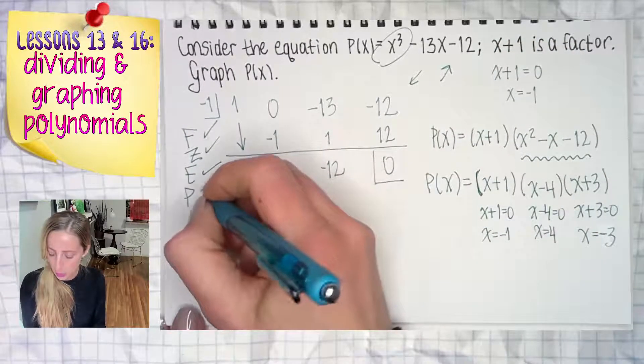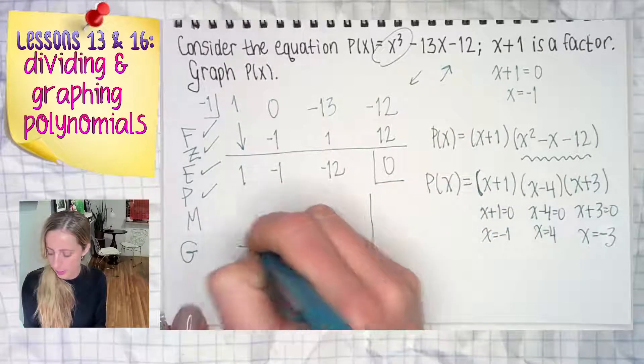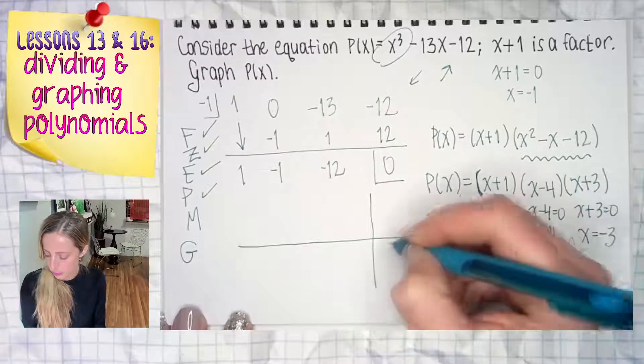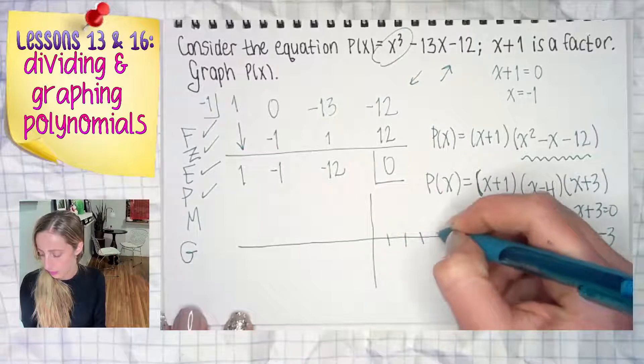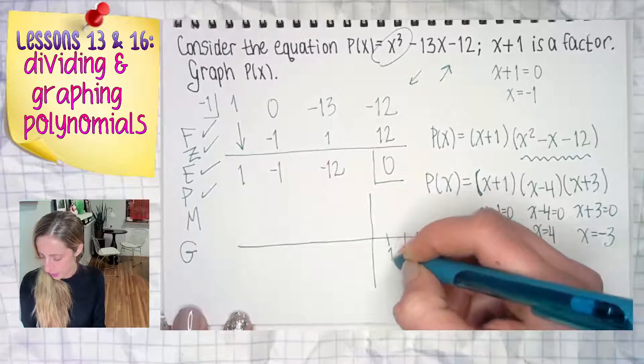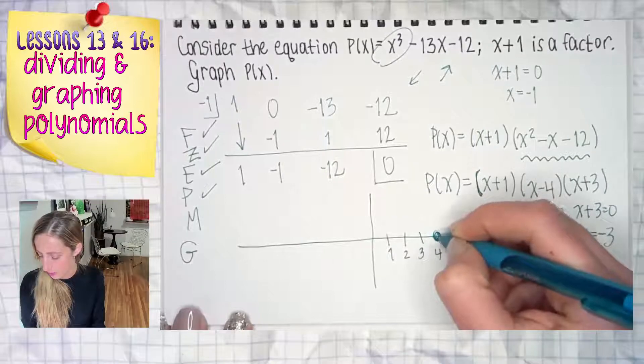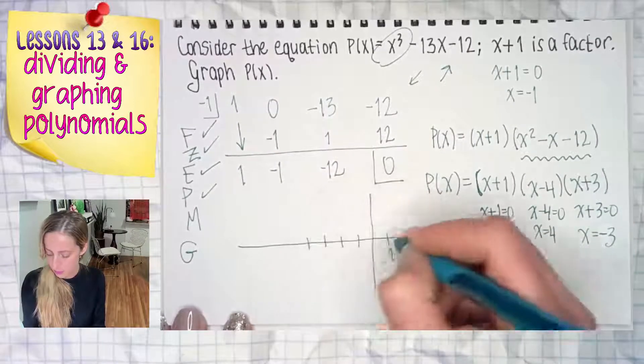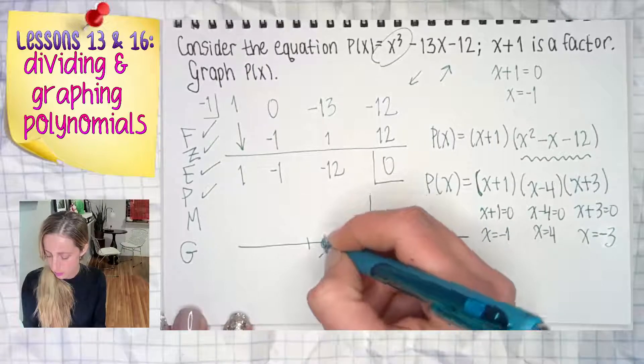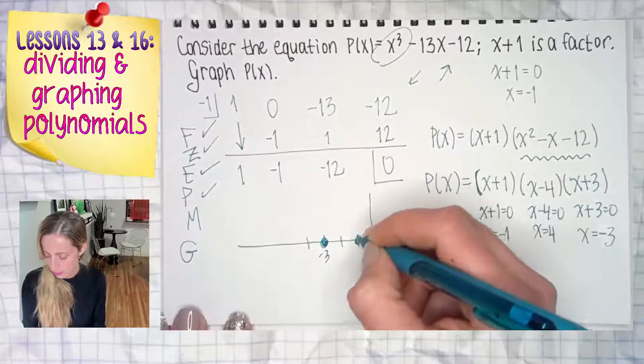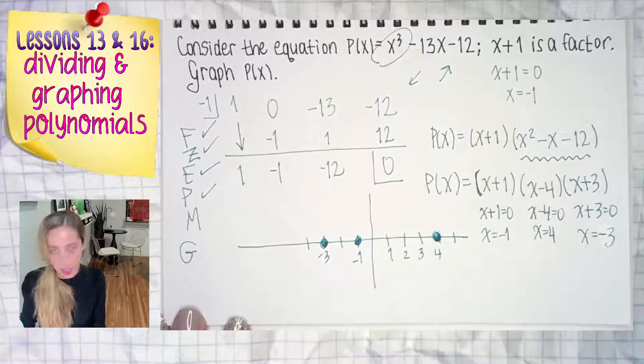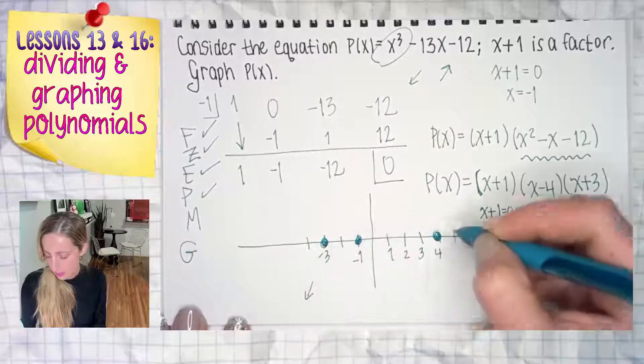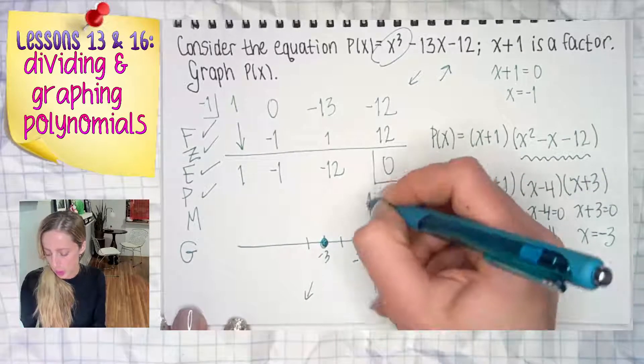Now plot the points on your paper. There we go. Got four. I need negative three, negative one. There we go. Down on this side, up on this side. Okay. Looking good.